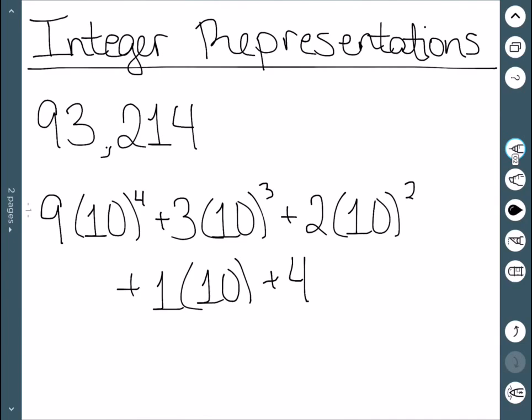And we learn this when we very first learn about place value in numbers. We have our 1s place, our 10s, our 100s because 10 squared is 100, thousands, 10 cubed is 1,000, 10,000, 10 to the 4th is 10,000.